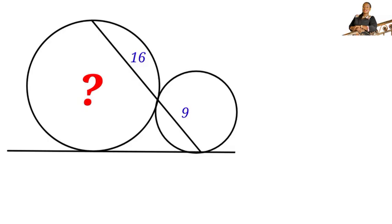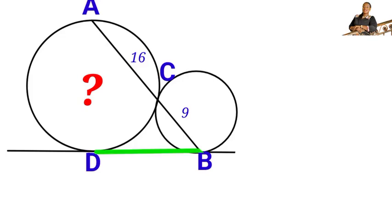To find the radius of the bigger circle, let us name these points: A, B, and C. C is the point where the two circles touch each other externally. Then point D is where the big circle touches the tangent line. The next thing we will do is find the length of DB, which is tangent to both circles.